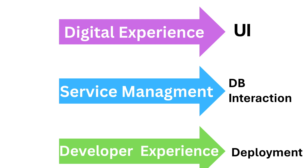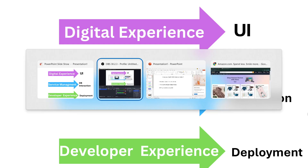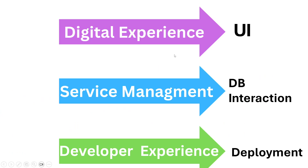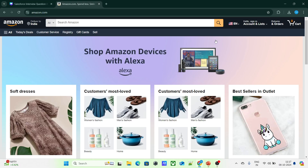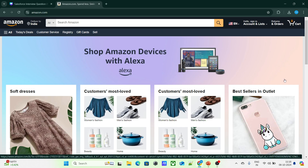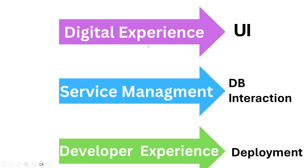Let's understand each of these with a real-time example. If I go to the Amazon website, using the Digital Experience layer, you can build the UI — like where the logo is, where the search box is, and everything like that. You can build the same thing using the Digital Experience layer, which is used to build the UI.